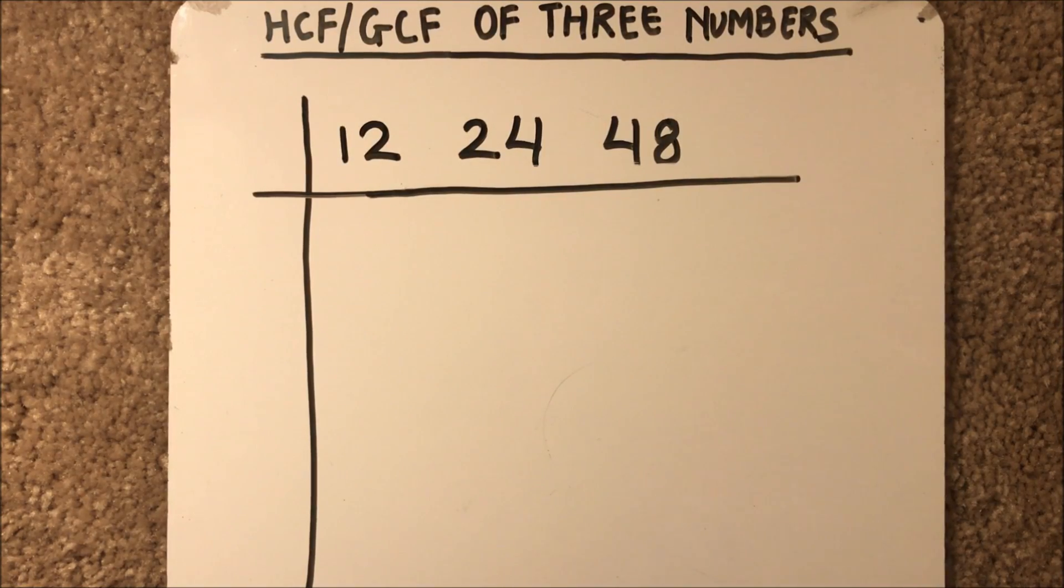Hello viewers, today I am going to tell you how to find the GCF or the HCF of three numbers. GCF is called the greatest common factor and HCF is called the highest common factor. Both are the same thing.